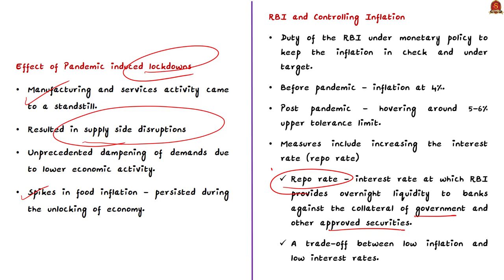To summarize: when we decrease the repo rate we are increasing money supply, and when we increase the repo rate we are decreasing money supply. If repo rate is increased, banks borrow less from RBI, fewer loans are given, people have less money, they buy fewer products, demand falls, prices come down, and there is a reduction in inflation. This is how, by using repo rate, RBI induces growth as well as controls inflation.